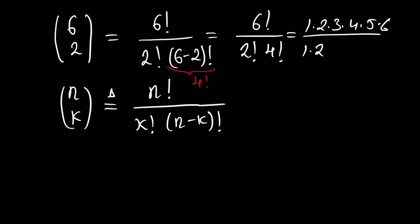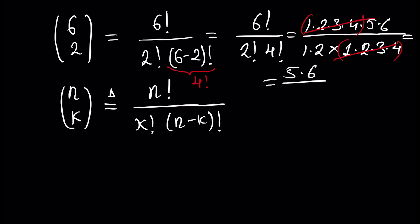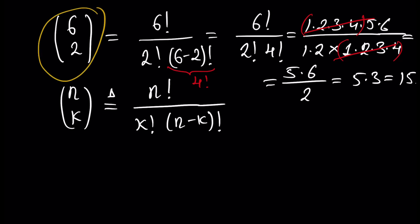2 factorial is 1 × 2, and 4 factorial is 1 × 2 × 3 × 4. We can cancel 1 × 2 × 3 × 4 from numerator and denominator, leaving 5 × 6 over 1 × 2. We can then simplify to get 5 × 3 = 15.